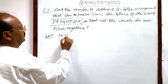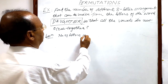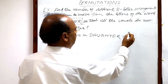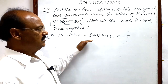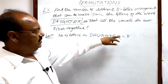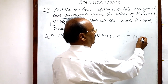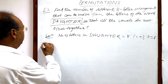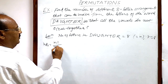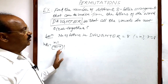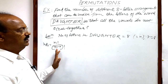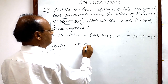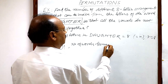The number of letters in the word 'daughter' is 8. When we take all these letters together, n is 8 and r is also 8. We will use the formula: nPr = n factorial divided by (n minus r) factorial. This is the very basic formula in the topic of permutations.